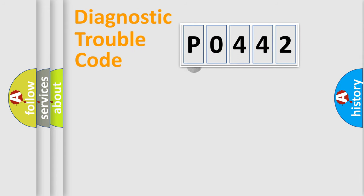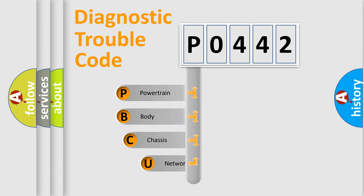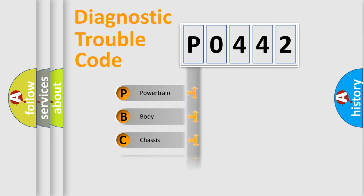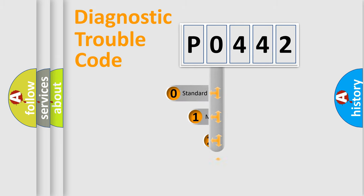First, let's look at the history of diagnostic fault code composition according to the OBD2 protocol, which is unified for all automakers since 2000. We divide the electrical system of the automobile into four basic units: Powertrain, Body, Chassis, and Network. This distribution is defined in the first character of the code.